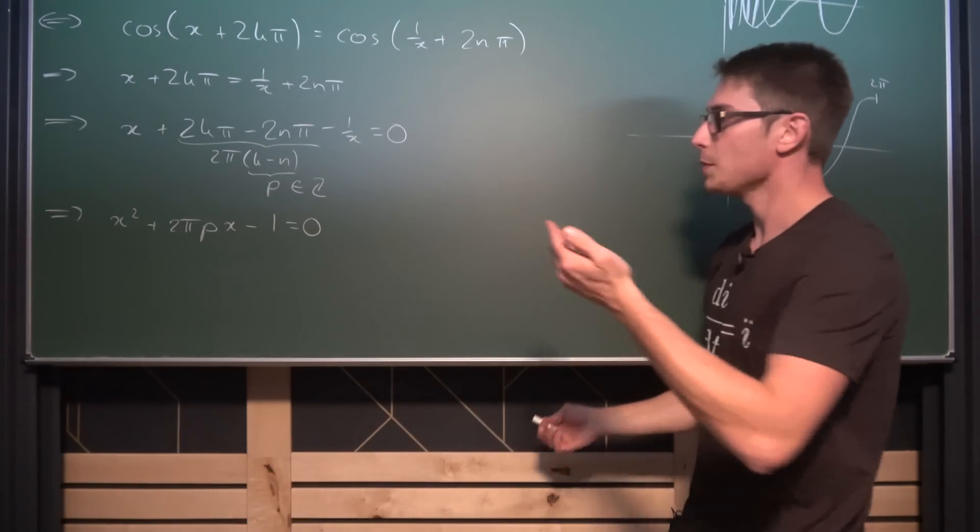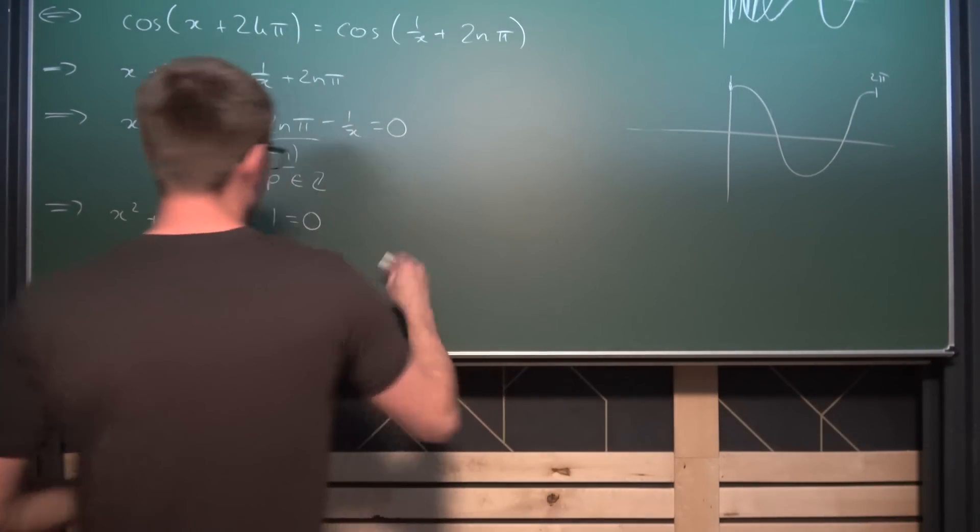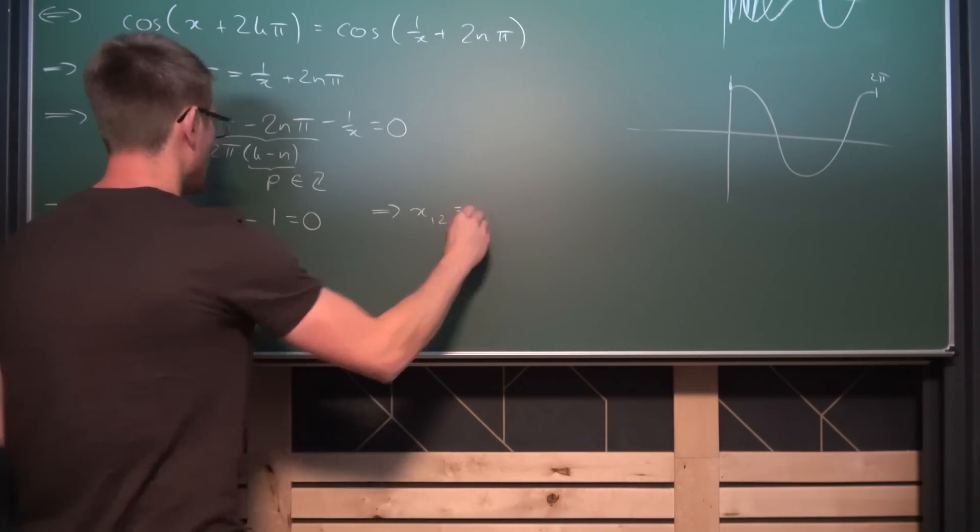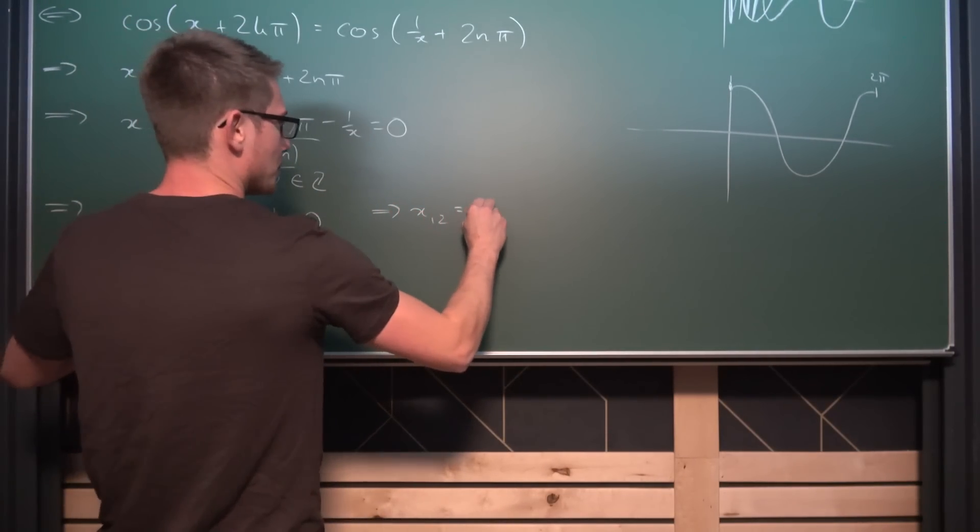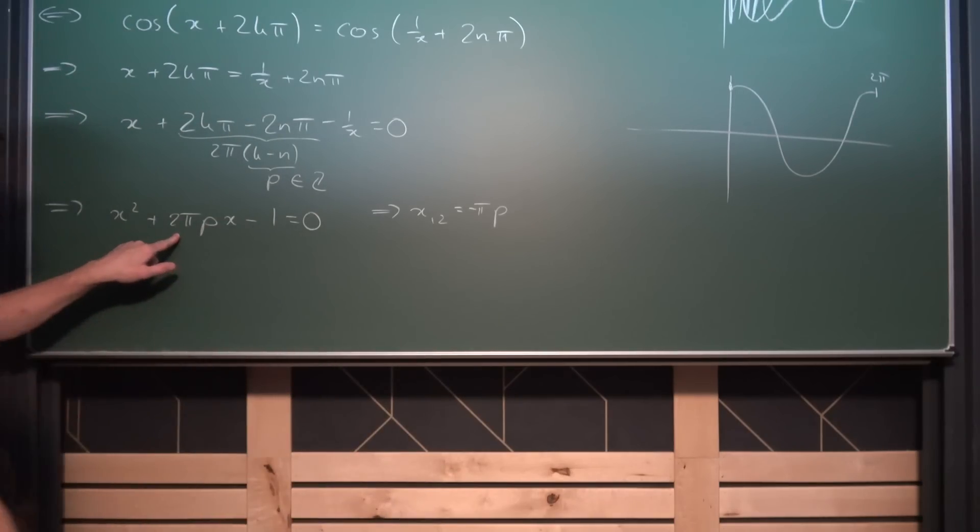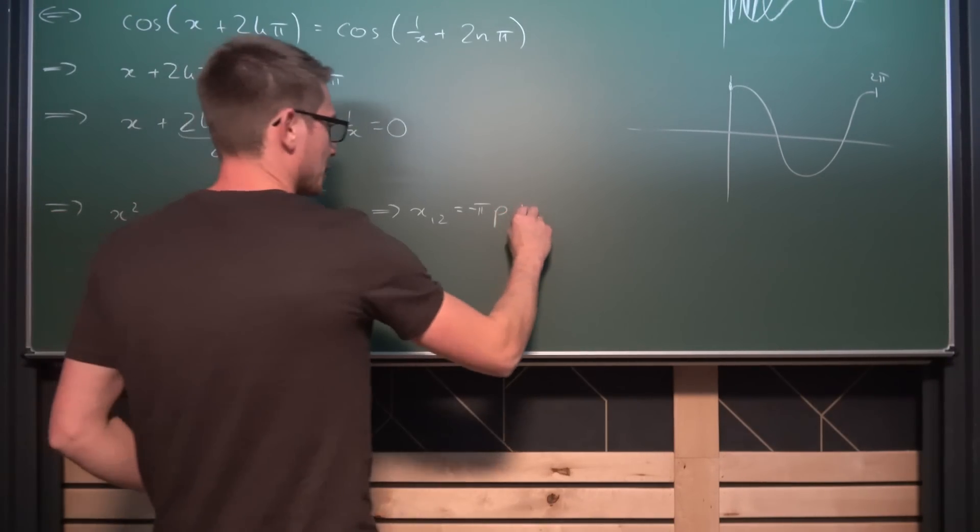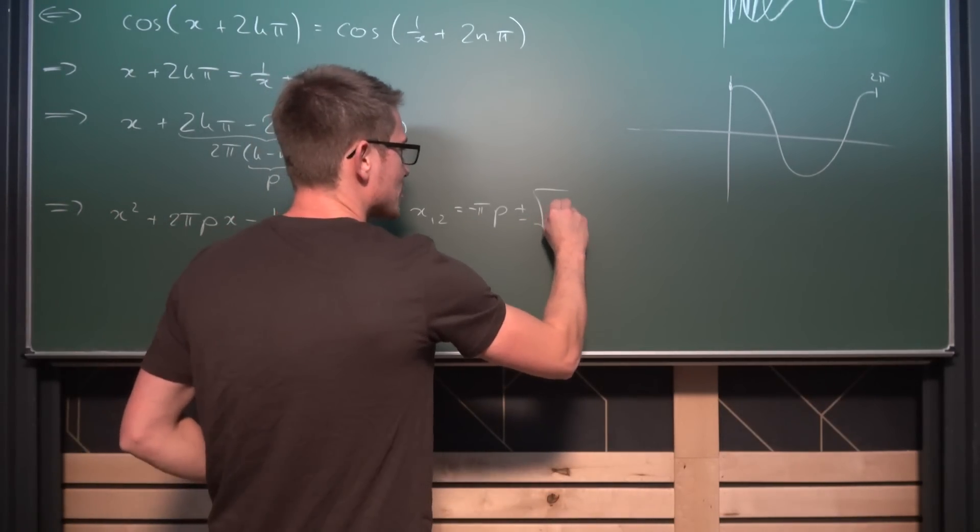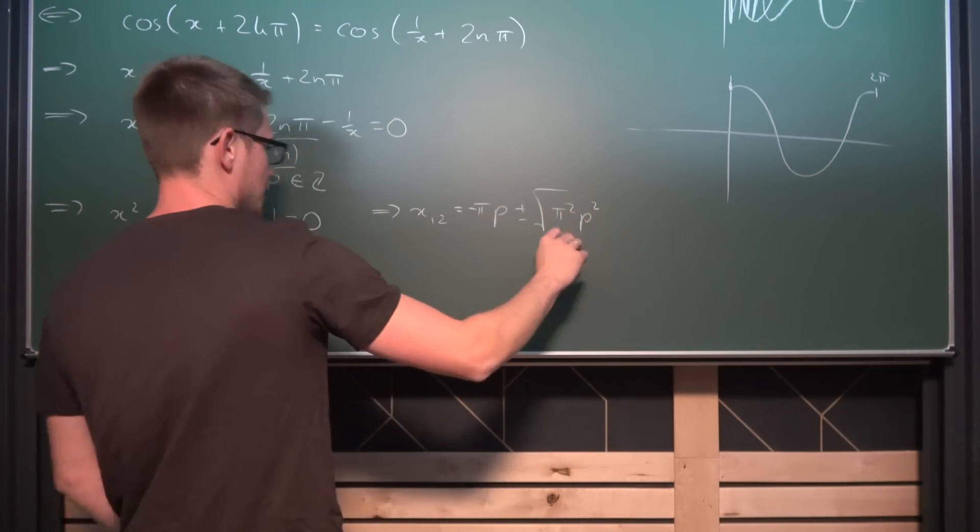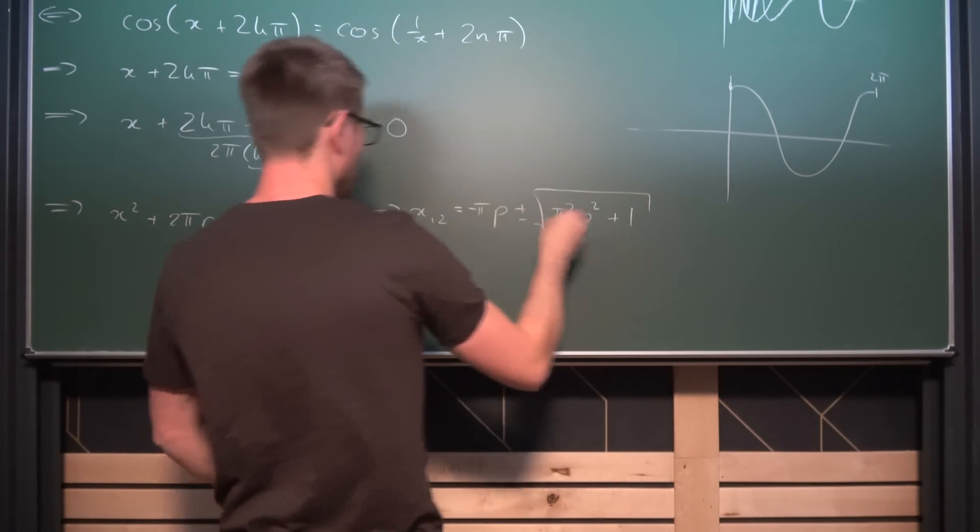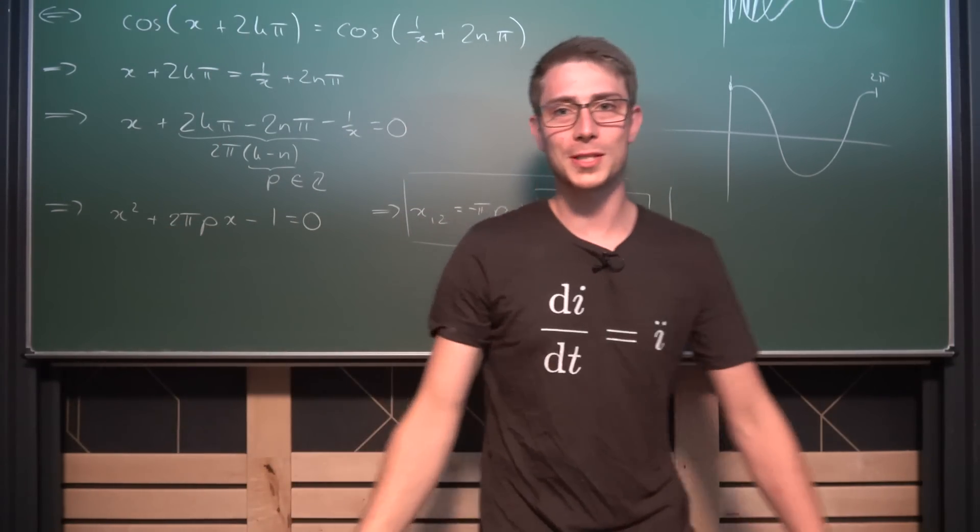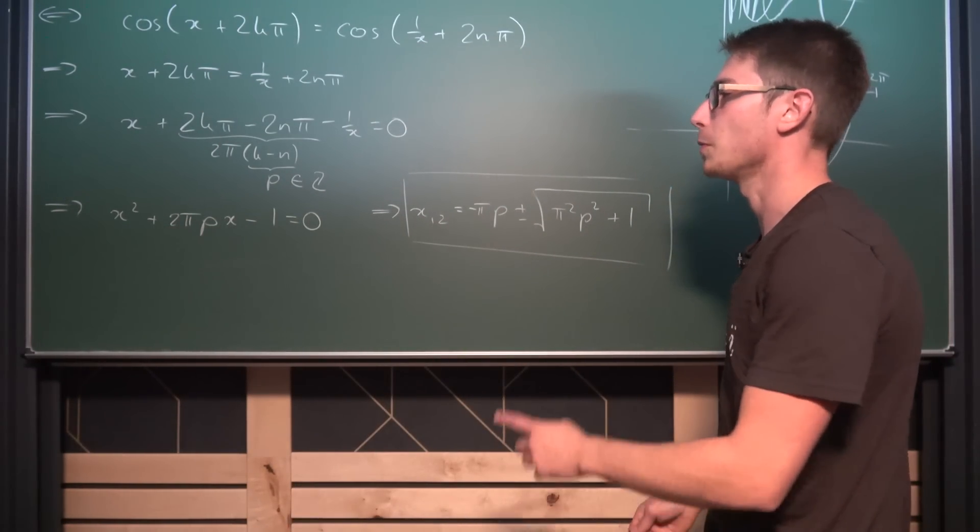And now just use the quadratic formula and let our magic play. Meaning what we are going to get is that two solutions: we are going to get -π·p plus and minus the square root of π²p² + 1. And those right here are two more solutions to our original problem.